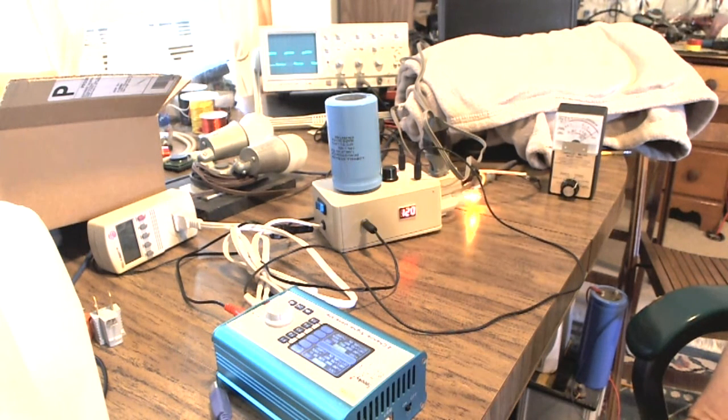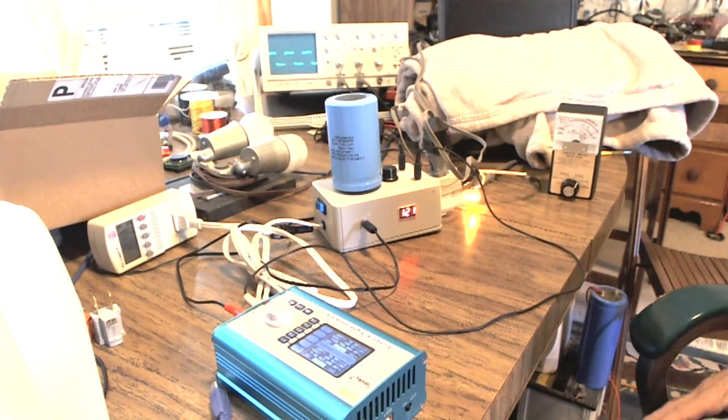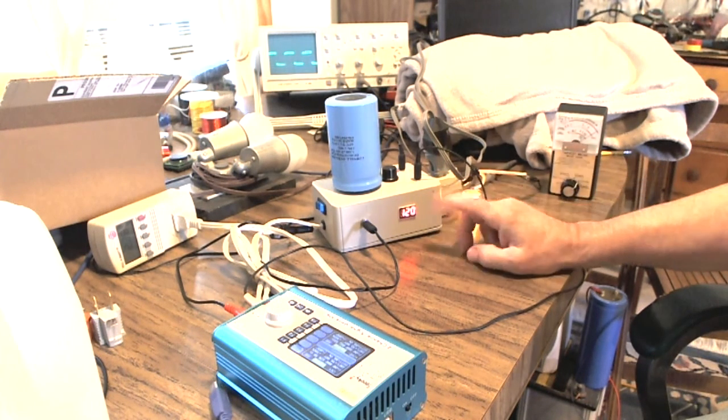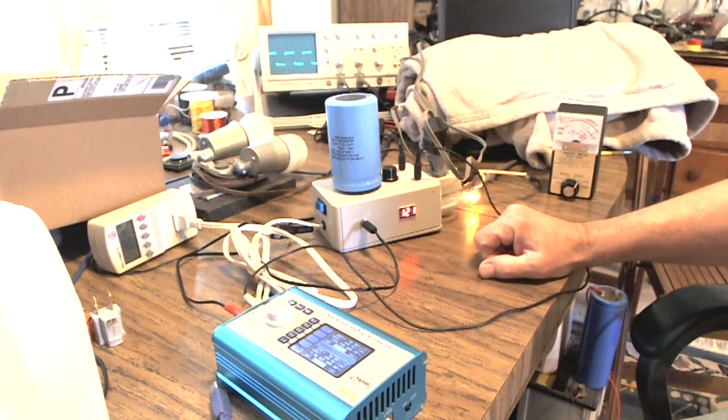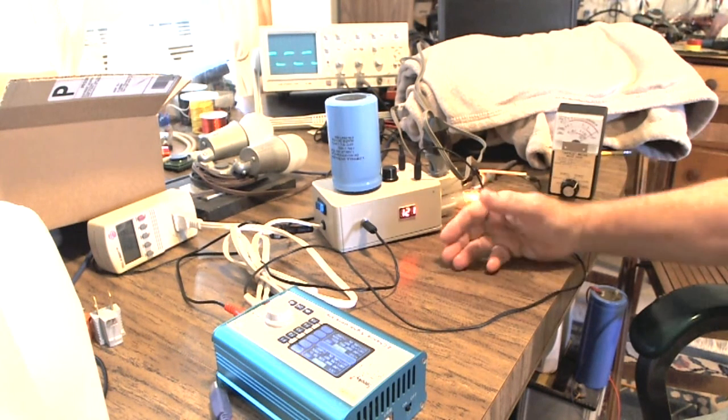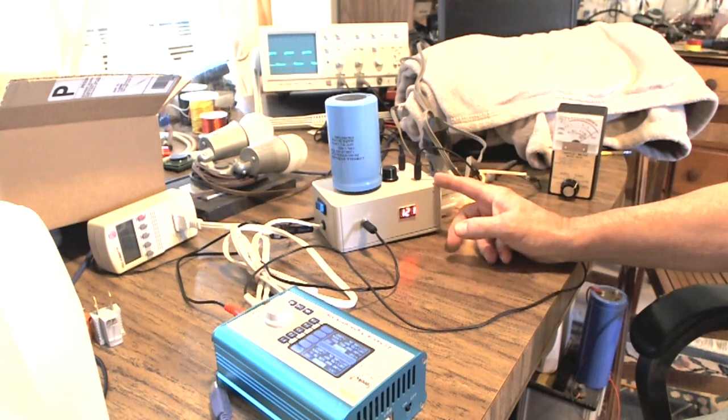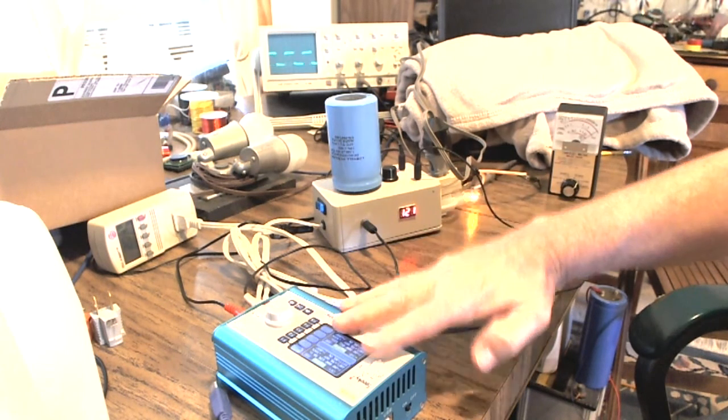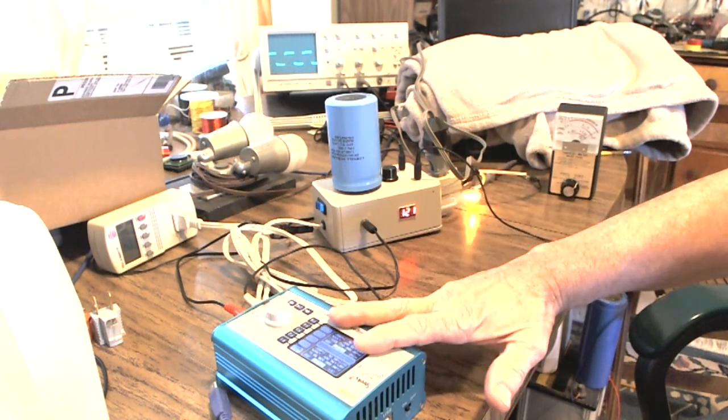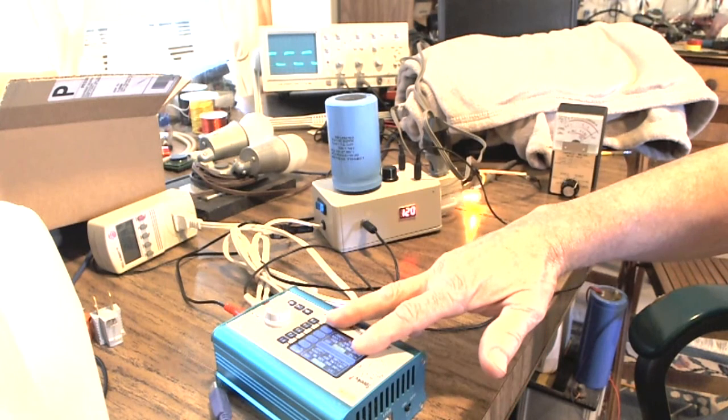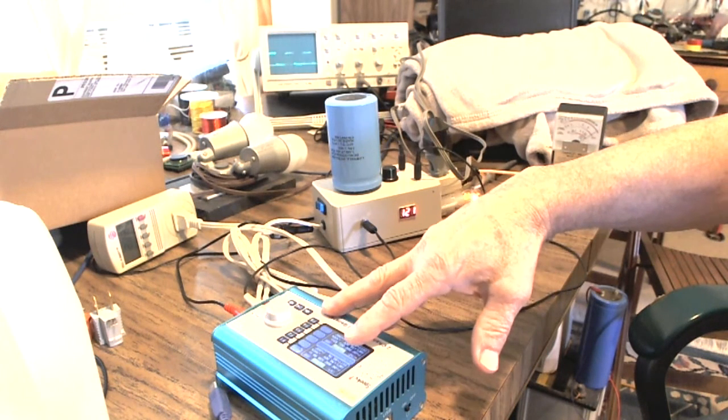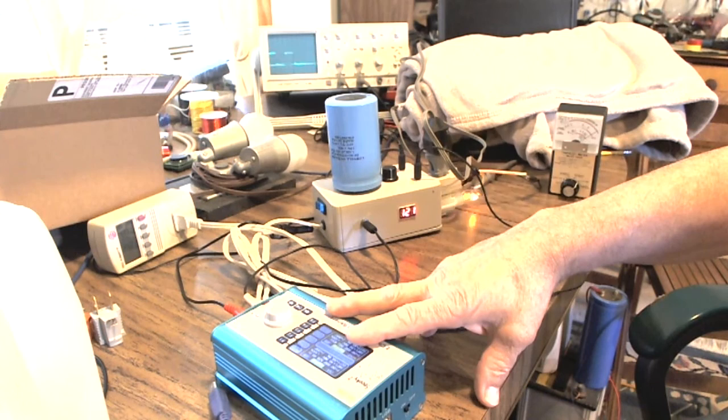All right. So there's a demonstration on running the heat blanket with the frequency controller. Stay tuned for more videos down the road. I will show you other things like controlling the power via duty cycle from a Spooky or another function generator. And I will show you running infrared LED arrays.